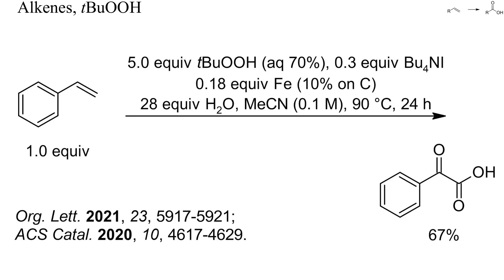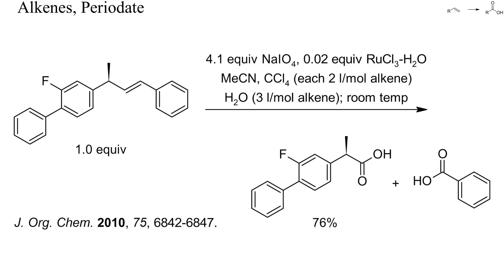Here, an excess of tert-butyl hydroperoxide and iron catalysis converted styrene into phenylglyoxylic acid. Sodium periodate is a relatively expensive reagent which generates problematic inorganic waste and can therefore only be used for the preparation of advanced intermediates. On the other hand, it is easy to handle and to dose precisely and enables highly selective oxidations.